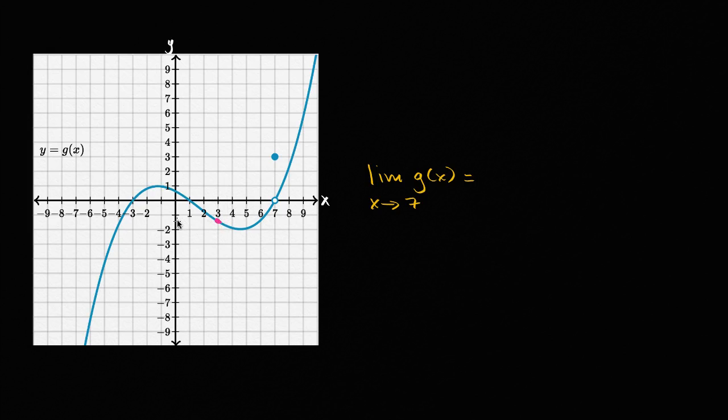g of three is here. g of three is right there. g of four is right there. g of five is right there. g of six looks like it's a little bit less than negative one. g of 6.5 looks like it's around negative half.